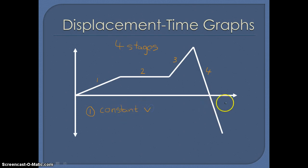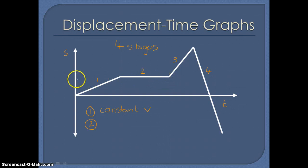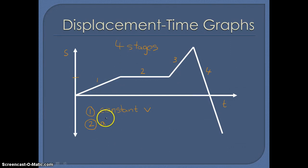On the axes, we always set time on the horizontal axis and displacement on the vertical axis. Stage number two is a horizontal line going straight across. What we have at stage two is a constant value for the displacement, which means that the object would be at rest.